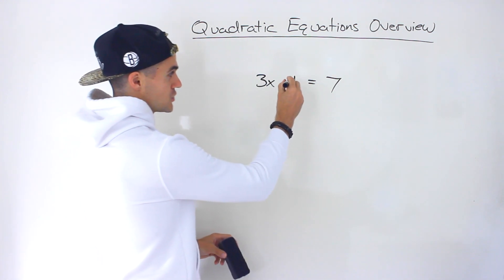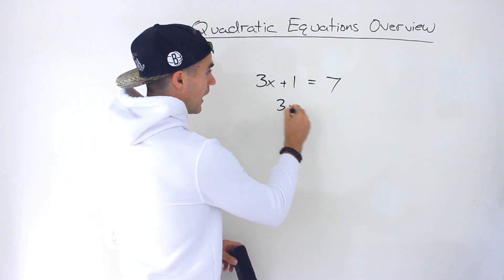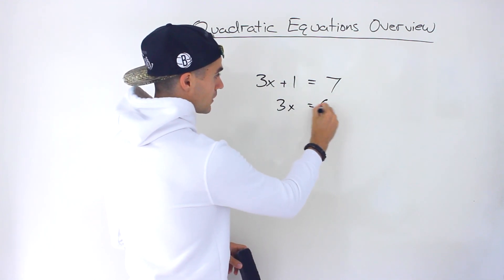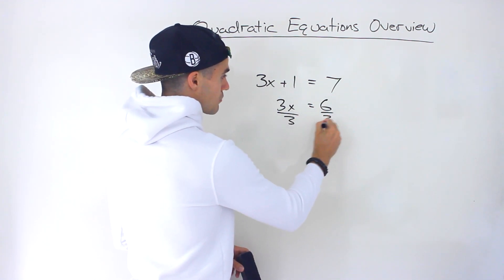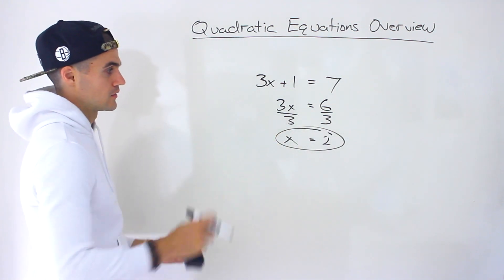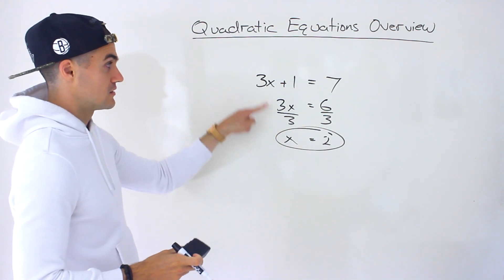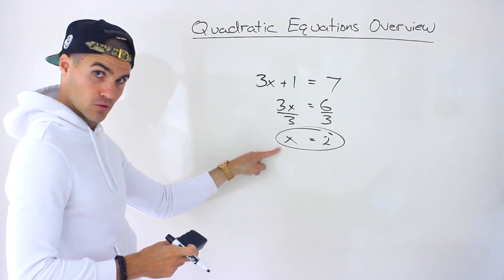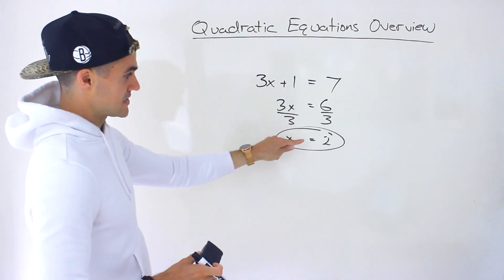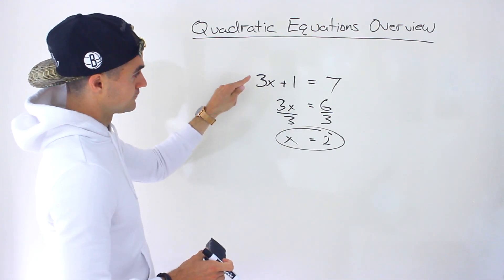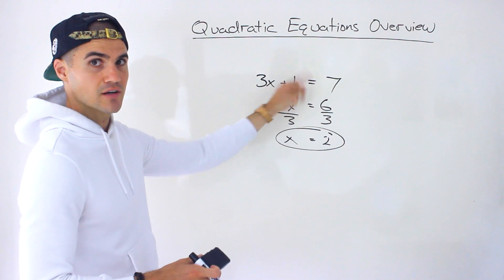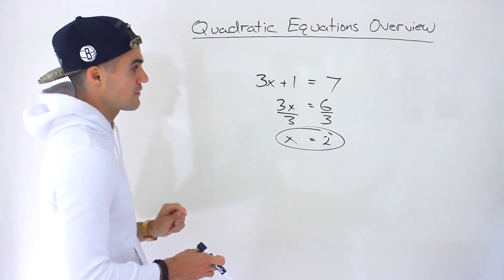When we're solving an equation, what we're really solving for is an x value — or whatever variable you're working with — that's going to make both the left side and the right side equal. If we solve this equation, we bring the 1 over, then we'll have 7 minus 1. The signs change, so that gives us 6. Then we divide both sides by 3, and we get an x value of 2. So plugging in 2: 3 times 2 is 6 plus 1 gives us 7. 7 is equal to 7.